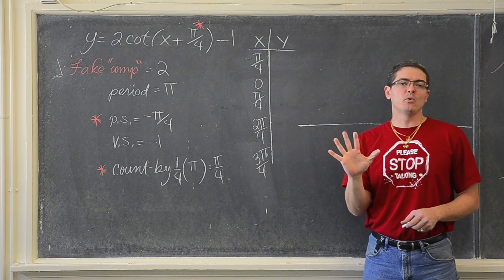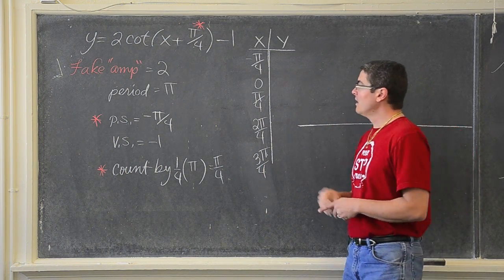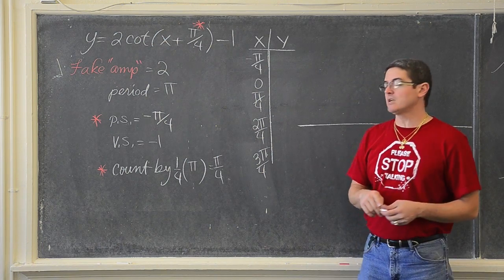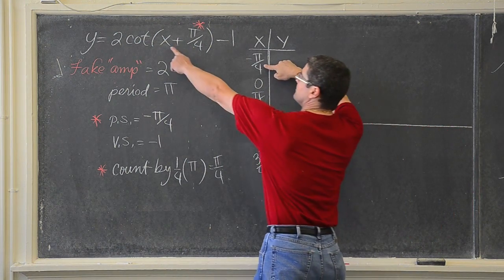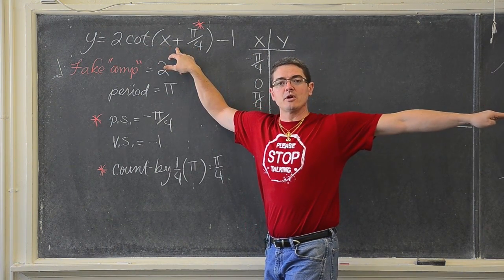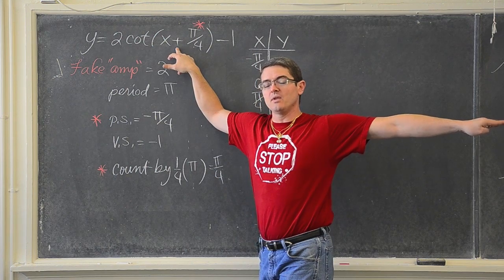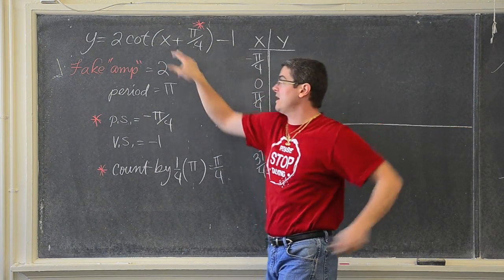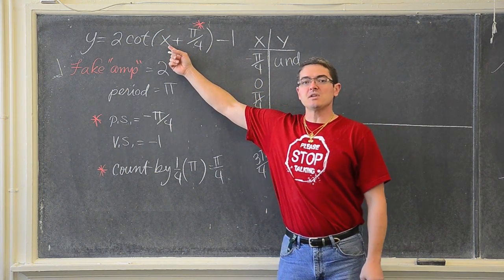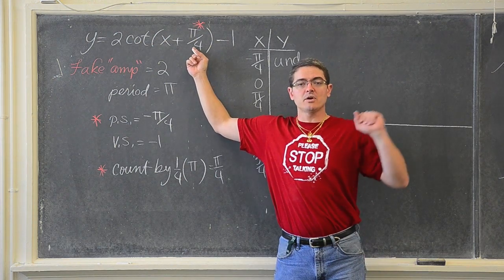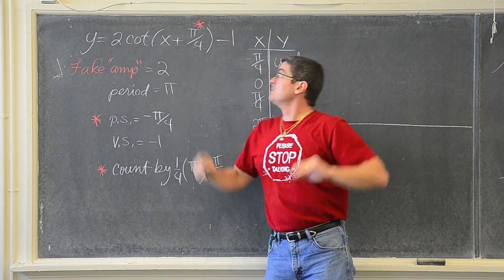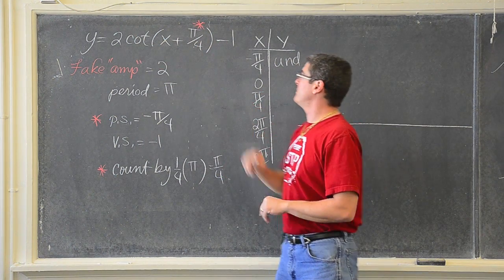We only need five points to make our first period from the t-table. Plugging in x = -π/4: -π/4 + π/4 = 0, and the cotangent of 0 — remember cotangent is x over y — is undefined. Plugging in x = 0: cotangent of π/4 is 1, times 2 is 2, minus 1 gives a y-value of 1.